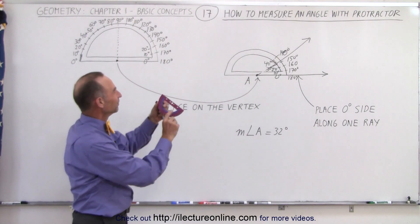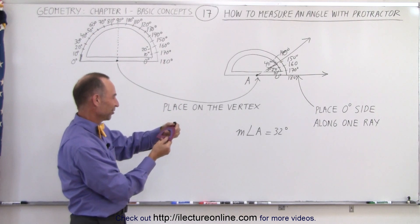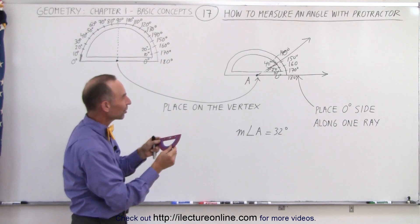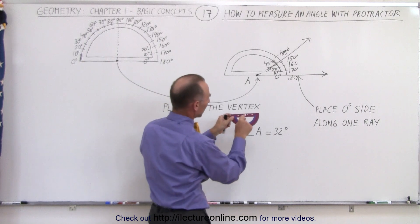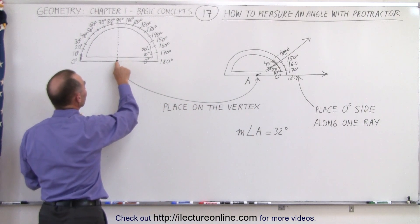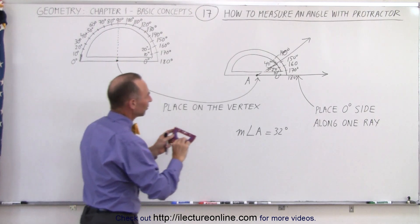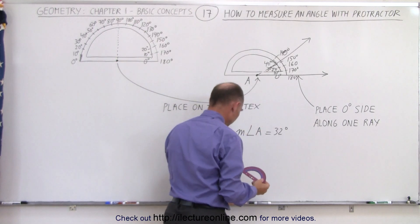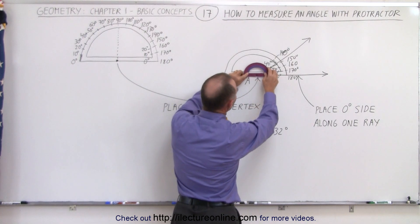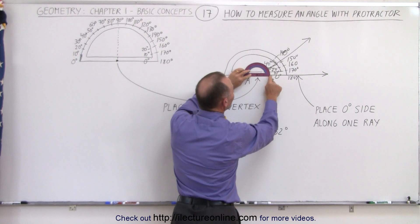So here I have a protractor, kind of a strange looking protractor, but anyway it works. So what we want to do is we want to take the dot right here, so sometimes the dot isn't placed right at the edge, the dot is placed a little bit higher up, but that works as well, doesn't matter. So what we would do is we would place the dot right there, where the vertex is.